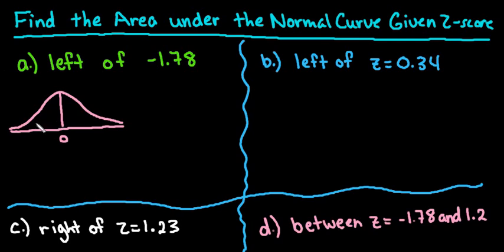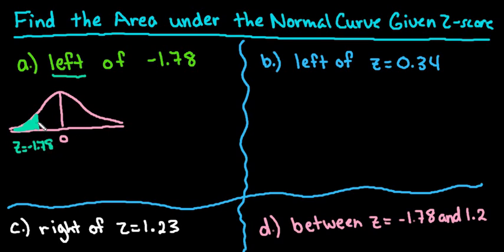So negative 1.78 would be down here — more than 1 but less than 2 standard deviations below the mean. Most normal tables give you the area to the left. Some give you the area to the right, so make sure you look at your normal table key to confirm that yours matches mine.